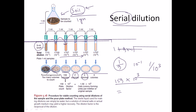That is how you calculate the total bacterial load present in the original sample, as well as obtain a desirable number of colonies to work with. Serial dilutions are important and required in many aspects of microbiology, especially in soil microbiology. That's it guys, thank you.